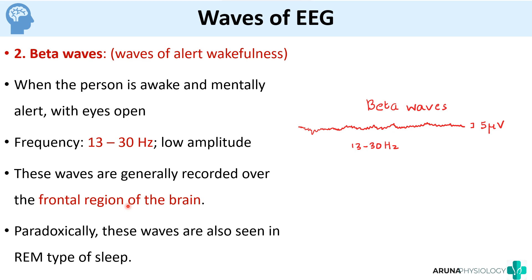Paradoxically, beta waves are also seen in REM type of sleep. We said that they are waves of alert wakefulness, but they can also be seen during REM sleep — that is why there is a paradox there.